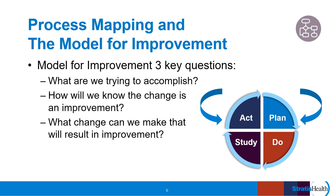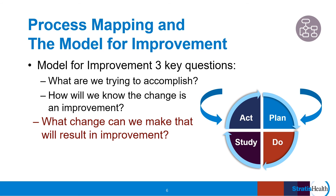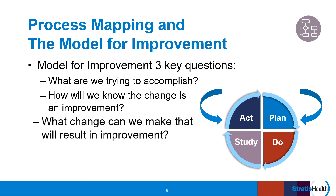Process mapping helps us to identify potential answers to the third question in the model for improvement: what change can we make that will result in an improvement? Once we have mapped the current process and understand how the work is actually carried out, we can discuss what changes are needed. We can modify the current state process map to create a future state process map reflecting the proposed changes. This is part of the plan step of the PDSA cycle. The team will test the modified process during the do phase of the cycle, which will provide data, feedback, and experience to inform the study phase, when the team reviews the results and finally takes action to either adapt, adopt, or abandon the process modifications. It is unlikely that the first attempt at a future process design will be perfect, setting your team up for a second round of PDSA rapid cycle testing after making adaptations based on what is learned in the first cycle.